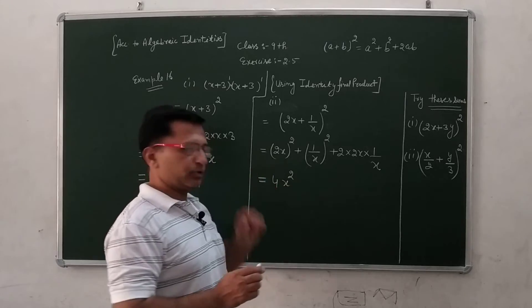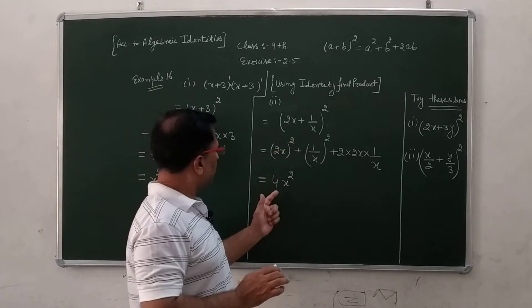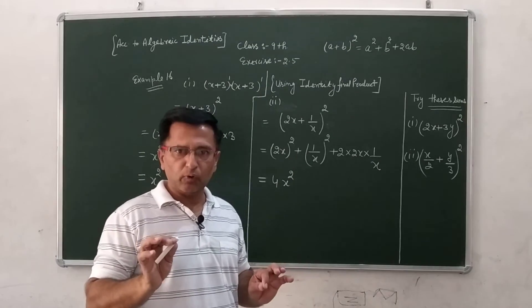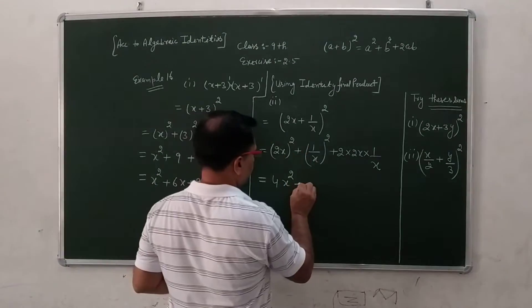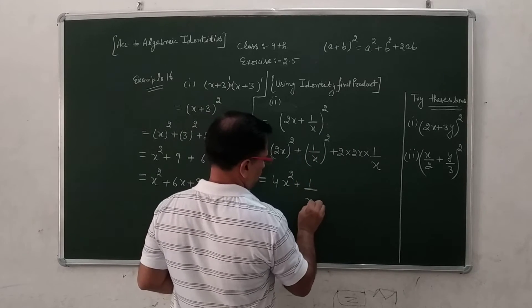Jaise yahan par 2 ka square ho gaya 4 or x ka square x square. Is tarah se karte hai. Kahi bachi kya karte hai, 2x ka 4x lagti hai. Us ka square to ye aega 4x square. Isi prakaar yahan par tha 1 ka square one or x ka square x square.